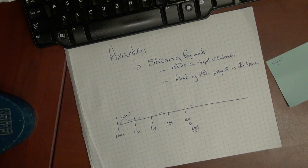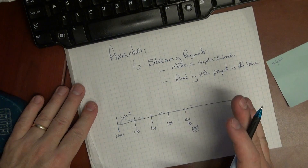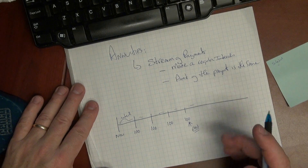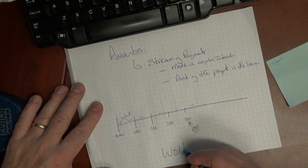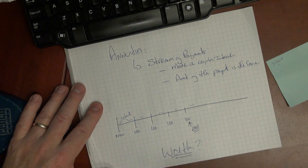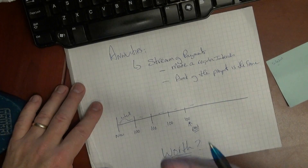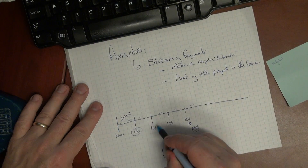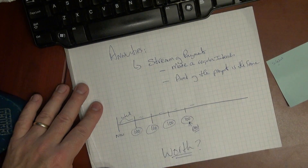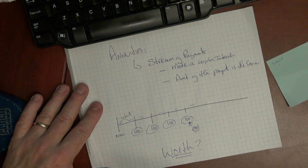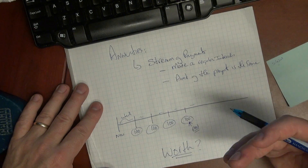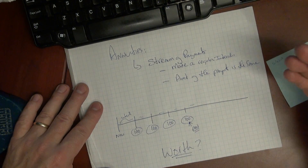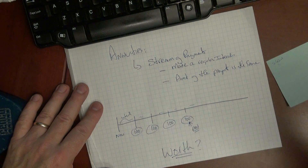So what is it we want to do? Well, we want to figure out the worth of these things. Let's say we have a stream of four payments of $100. You might say that's $400 you paid — and yes, that's true, it is $400 — but we have to consider the time value of money.